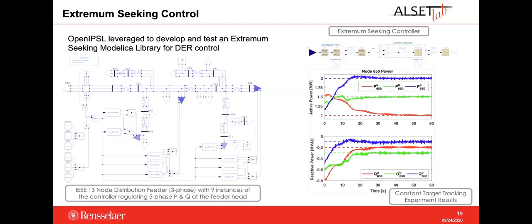In the last application, the three-phase sub-package was used to create the IEEE 13-bus system, a distribution system containing many three-phase, two-phase, and one-phase loads — making it a completely unbalanced network. This network was used to test an extremum seeking controller that regulates active and reactive power (P and Q) for each phase at the feeder head. More results from this application are discussed in Maxim's publication at this conference.